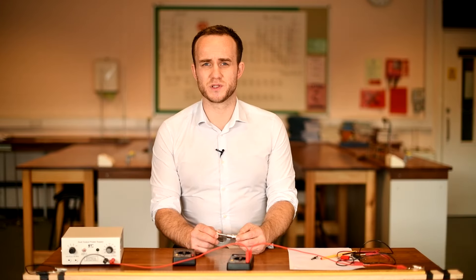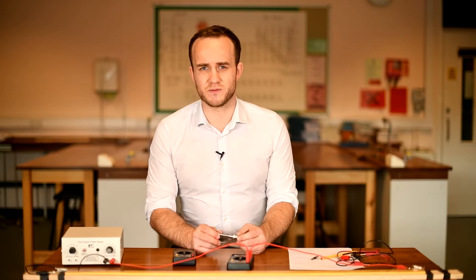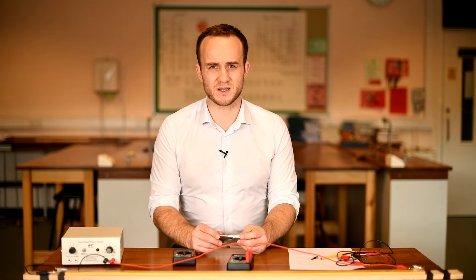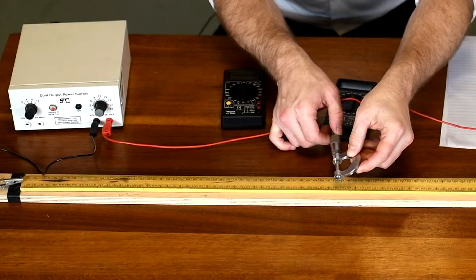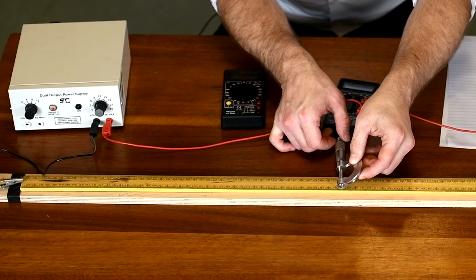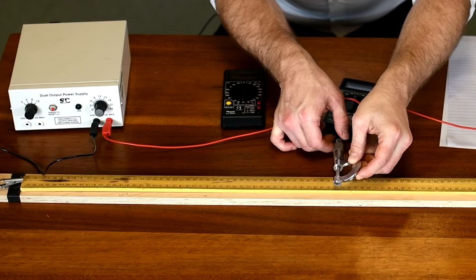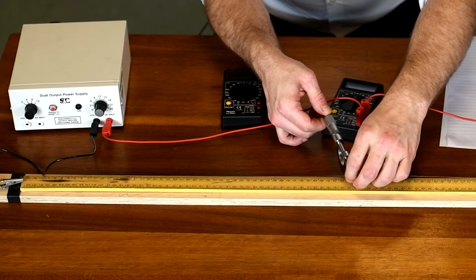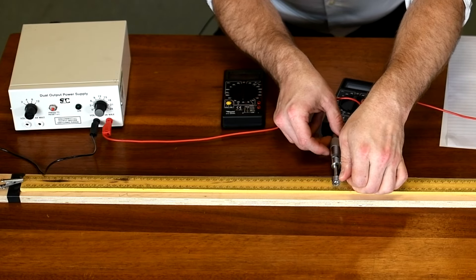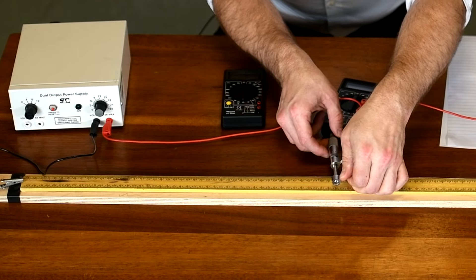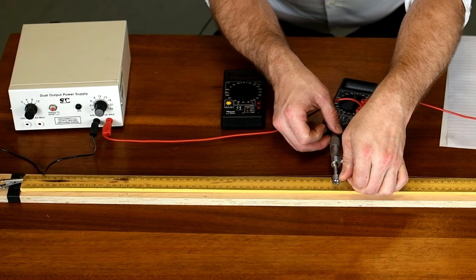So because there might be some variation in thickness we want to measure the diameter at three different points and then average them. They should be similar but you always have to check. So you just open the micrometer up, put the wire in between, careful not to stretch it, and then you want to close the micrometer but being careful not to compress it, and that's why we have this ratchet on the end.